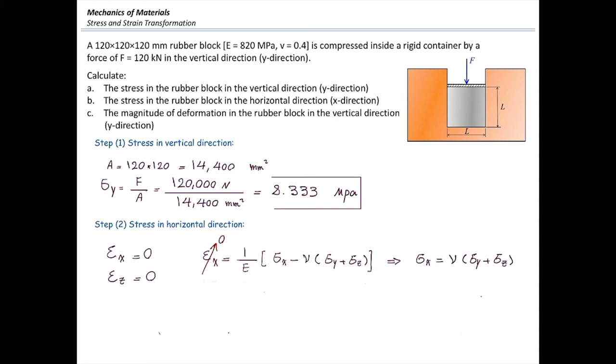We will do the same for epsilon z equation. Because epsilon z is equal to 0, we get sigma z equal to nu multiplied by sigma y plus sigma x. All right. We know how much is sigma y. It is 8.33. We have already determined that.